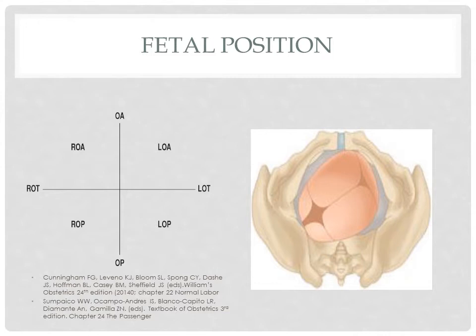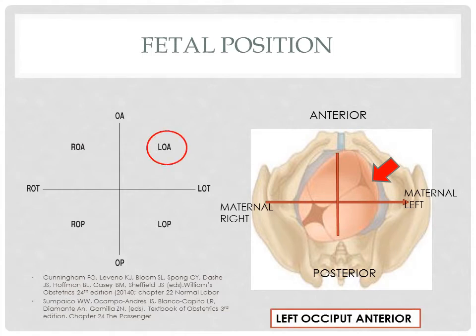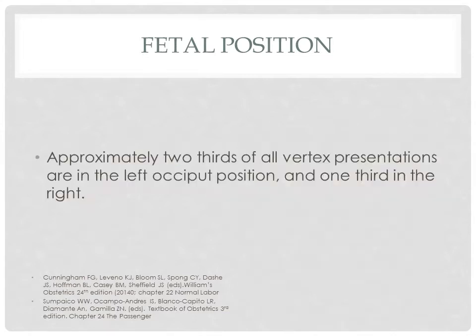To illustrate: the fetus is in cephalic or vertex position, so our reference point is the occiput. This is maternal left, this is maternal right, anterior is where the symphysis pubis is, posterior is where the sacrum is. Draw an imaginary cross — anything above the transverse line is anterior and anything below is posterior. In this case, the position is left occiput anterior. Approximately two-thirds of all vertex presentations are in the left occiput position and one-third in the right occiput position.